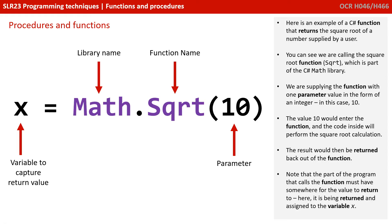Here's an example of a C-sharp function that returns the square root of a number supplied by the user. You can see we're calling the square root function sqrt, which is part of the C-sharp math library. We're supplying the function with one parameter value in the form of an integer, in this case 10. The value 10 would enter the function and the code inside will perform the square root calculation. The result would then be returned back out of the function. Note that the part of the program that calls the function must have somewhere for the value to return to. Here it's being returned and assigned to the variable x.